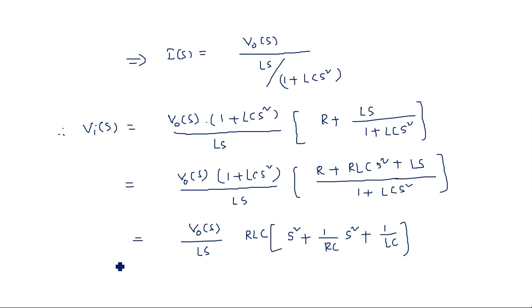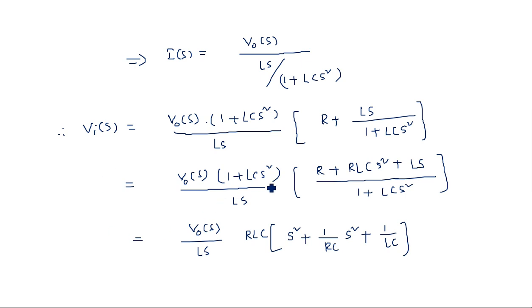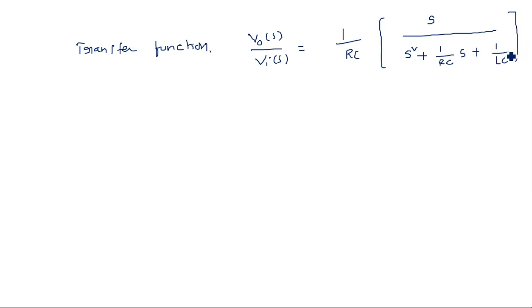Now what is the transfer function V_out of s over V_i of s? V_i of s moves to the right-hand side and remaining factors go to the left-hand side. Note that L cancels, giving 1 over RC. So the transfer function V_out of s divided by V_i of s equals (1/RC) times s, divided by s² plus (1/RC)s plus 1/LC. This is the transfer function we have obtained for the RLC parallel circuit.